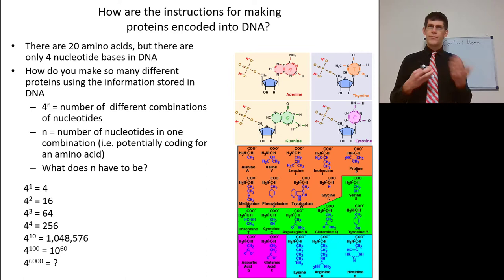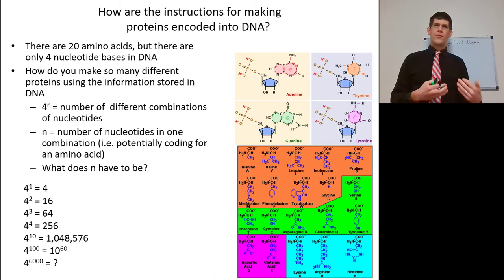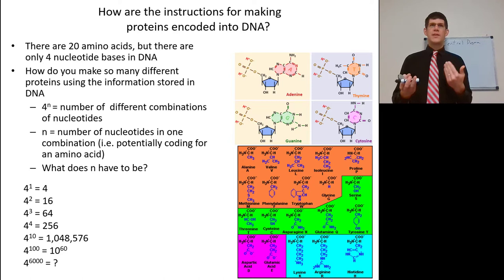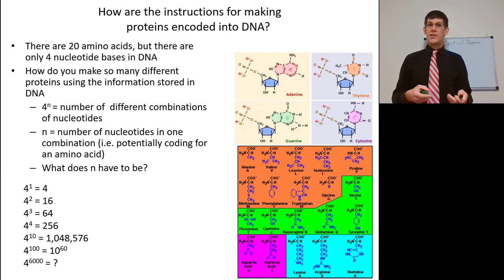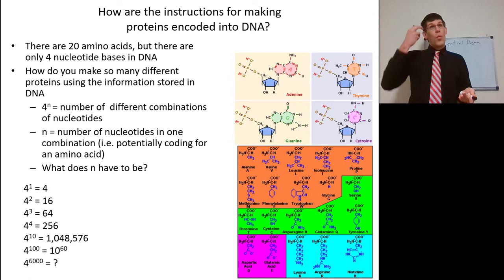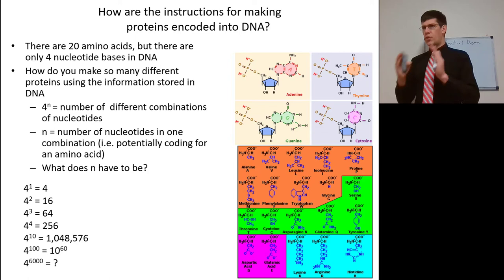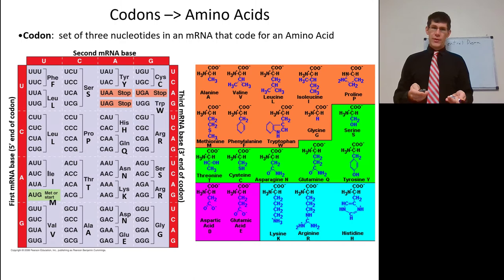The number of different combinations of nucleotides is four to the N, because you have four types. If each single nucleotide coded for an amino acid, that'd be only 4. If two nucleotides together were read as a pair, you could code for 16. Three nucleotides code for 64 — so reading those DNA triplets can code for up to 64 different amino acids. Since we have 20 amino acids and need more than 16, it must be three nucleotides. But that code is, as we say, degenerate.